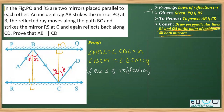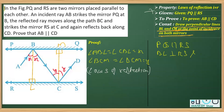Perpendiculars drawn on two parallel lines are also parallel. Since PQ is parallel to RS, and BL is perpendicular to RS while CM is perpendicular to PQ, we can say that BL is parallel to CM. Whenever two parallel lines are given and you draw perpendiculars on them, those two perpendiculars are also parallel.